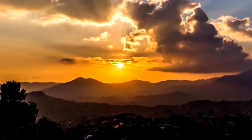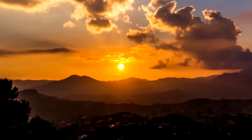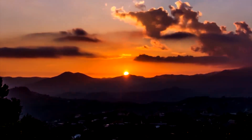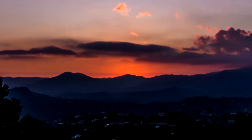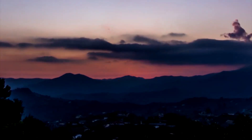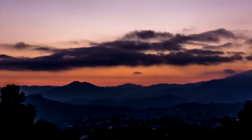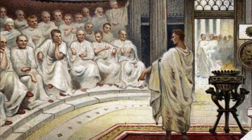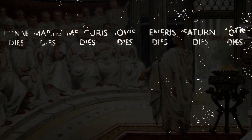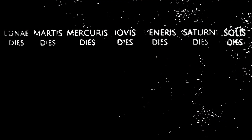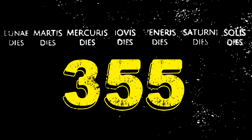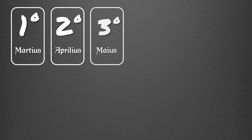Este registro evidenció en poco tiempo un desfase entre las fechas y estaciones con respecto a la temperatura, las precipitaciones y la luz solar. Con la reforma de Numa Pompilio, segundo rey de Roma, el año pasaría a tener 355 días, iniciando en el mes de marzo.